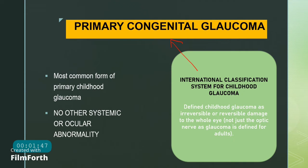The international classification system for childhood glaucoma defines childhood glaucomas differently from adult glaucoma. In adults, the optic nerve gets involved and a corresponding visual field defect is present. However, in childhood glaucomas, the definition is irreversible or reversible damage to the whole eye. Primary congenital glaucoma is the most common type of primary childhood glaucoma, and importantly it is a primary condition with no other systemic or ocular abnormality causing it.